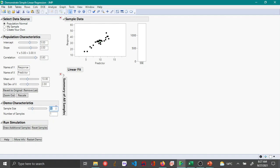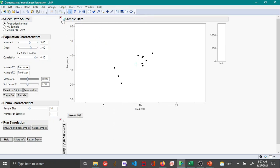I'm going to reduce the sample size to 10 so that we can clearly see how the method of least squares works. Let me make this bigger.